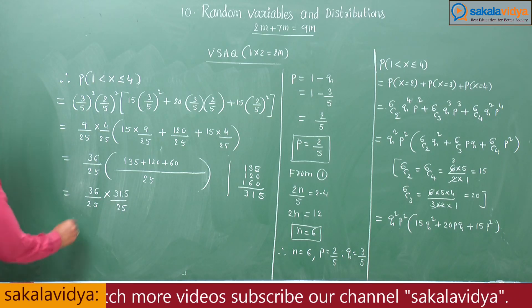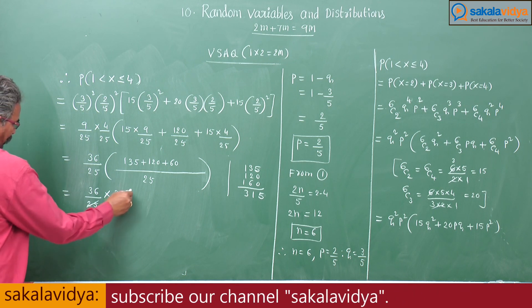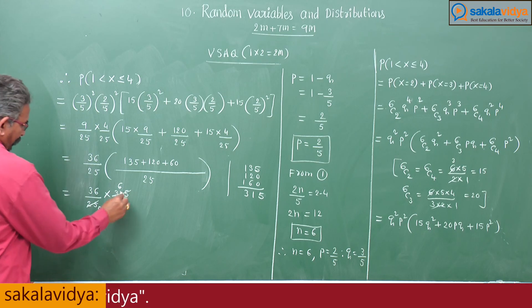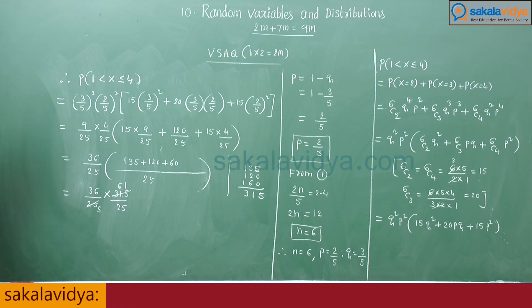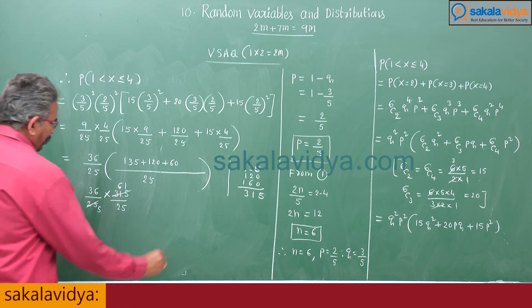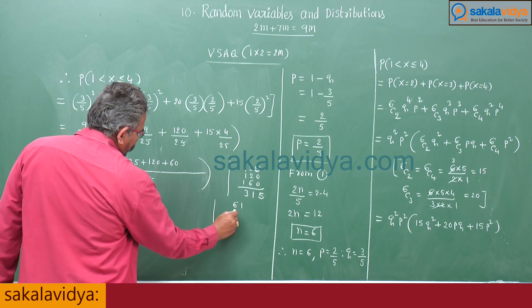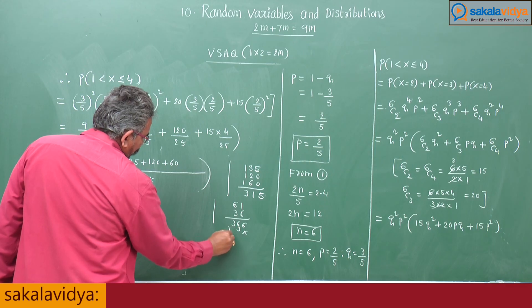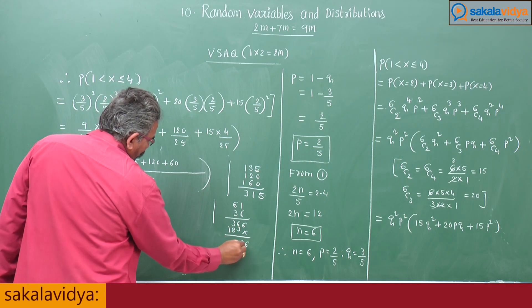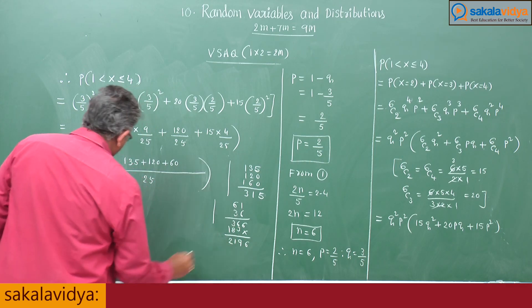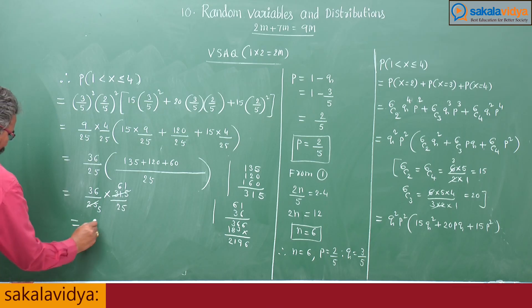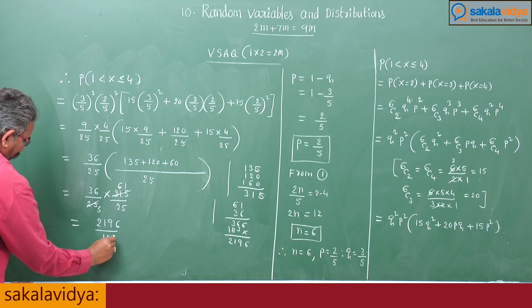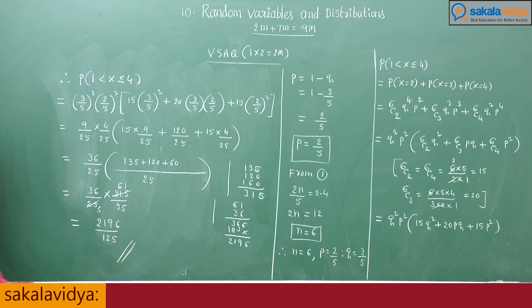Simplifying: 315/25 = 63/5. Then (36/625) × (63/5) = 2268/3125. Cancelling common factors gives the final answer of 2268/3125. Thank you.